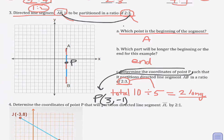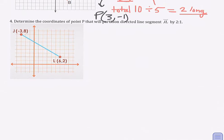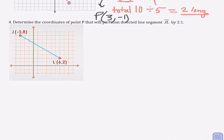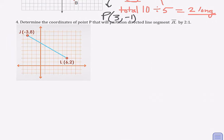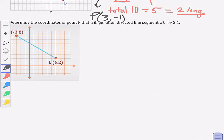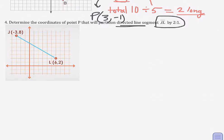Let's take a look at a diagonal example — you can always replay this lesson if you need to. Question four: determine the coordinates of point P that will partition directed line segment JL by a ratio of two to one. Since it's a directed line segment, J is the start. So J will win this tug of war and win two of the three pieces.